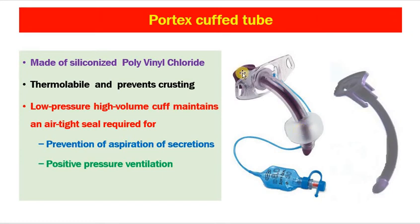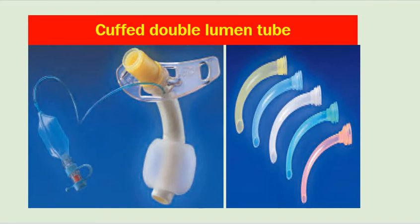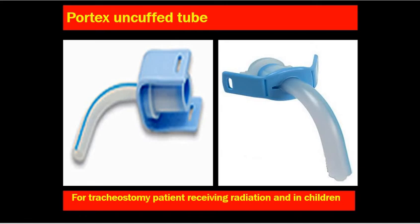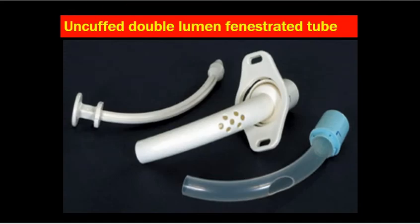As a modification, cuffed double lumen tubes are available — these are cuffed fenestrated tubes. The fenestration helps in decannulation, breathing, and speaking. Cuffed fenestrated tubes help in phonation, and during decannulation the outer part can be closed. Portex tubes can also be uncuffed. Children have weak tracheal rings, so there is a risk of tracheal necrosis with a cuffed tube; therefore uncuffed tubes are used in children and in patients receiving irradiation. Uncuffed double lumen fenestrated tubes are also available for ventilation and phonation purposes.